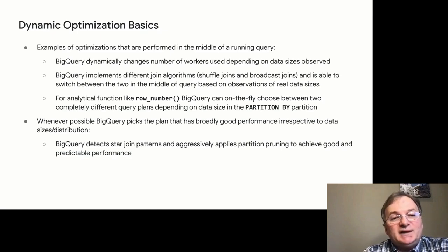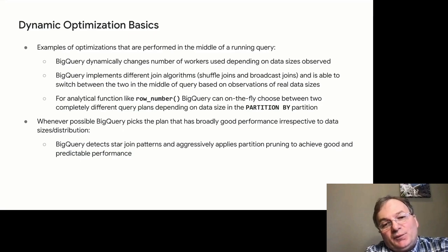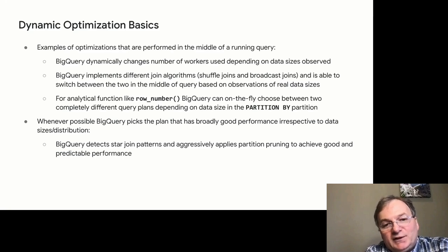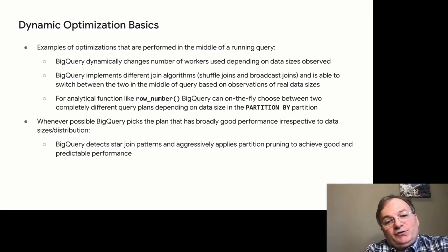Examples of query plan adjustments BigQuery can do mid-query: first, parallelism level — BigQuery can change query parallelism depending on observed data size. If we initially estimated one terabyte of data but it appears the amount is more like ten terabytes, and if we have additional workers available, we should use them because the amount of work went up. This is exactly what happens in BigQuery.